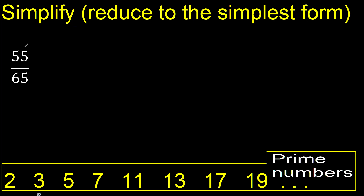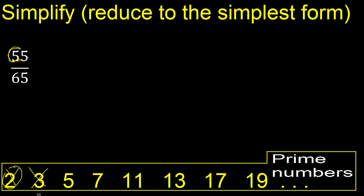Can 55 and 65 be divided by 2? No, because the last digit is not even. They cannot be divided by 3 because 5 plus 5 is 10, and 10 cannot be divided by 3. They can be divided by 5 because the last digit is 0 or 5 — in this case, 5.